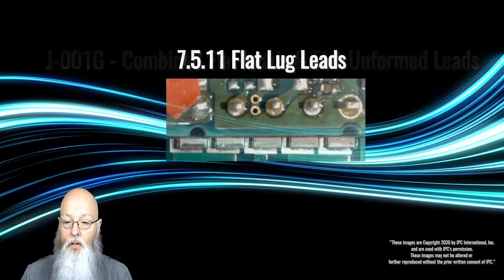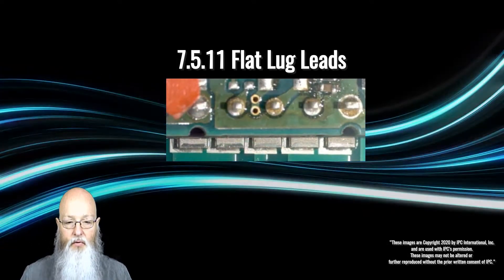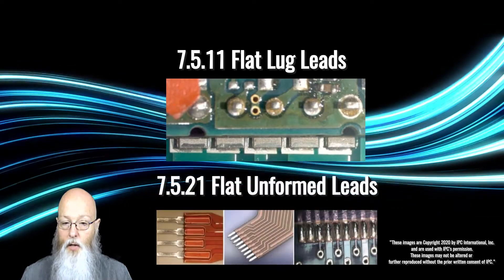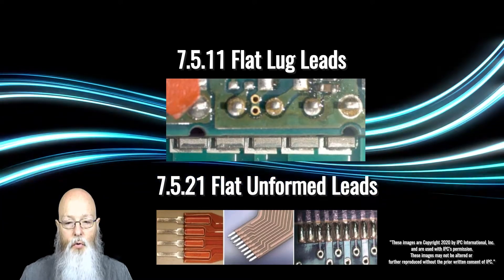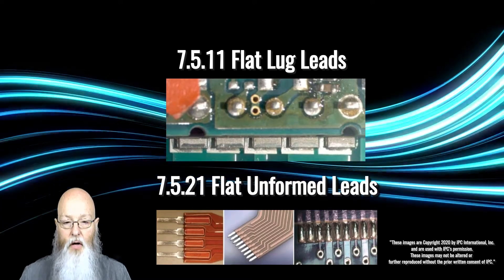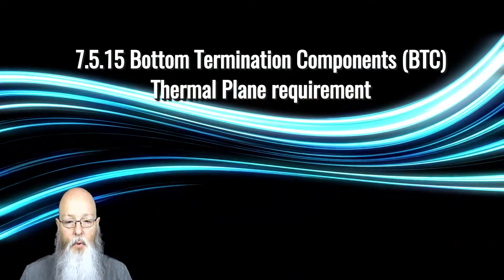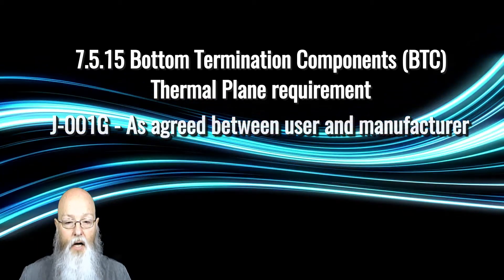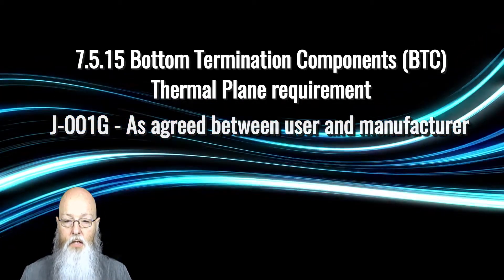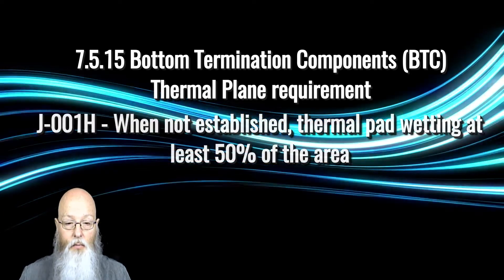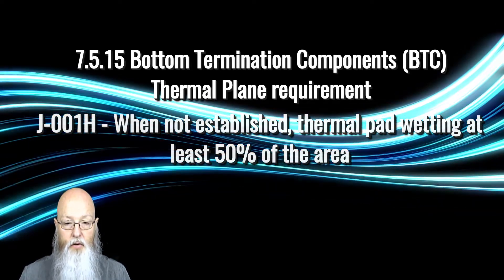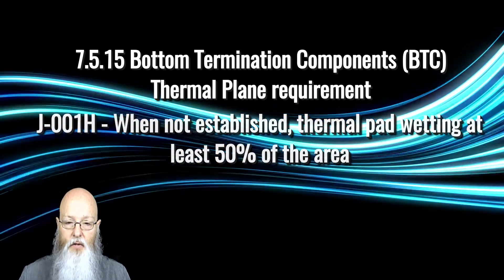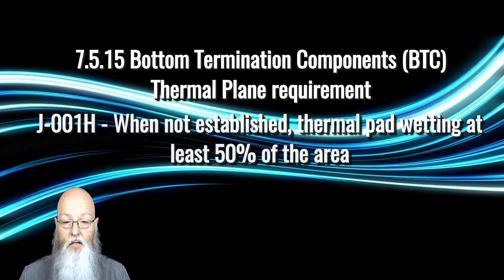Flat lugged leads, such as power dissipating solid leads, are in 7.5.11, while the criteria for flat unformed leads — as occur on flexible leads and other variable circuits that will be soldered onto the lands of a rigid board — have been moved into section 7.5.21. Bottom termination components criteria had previously been left to as agreed between the user and manufacturer. Revision H updates the requirements to say: when the criteria has not been established, the soldered connection shall be larger than 50% of the thermal plane wetting area. Failure to achieve 50% of the soldered connection is a process indicator for both Classes 2 and 3.